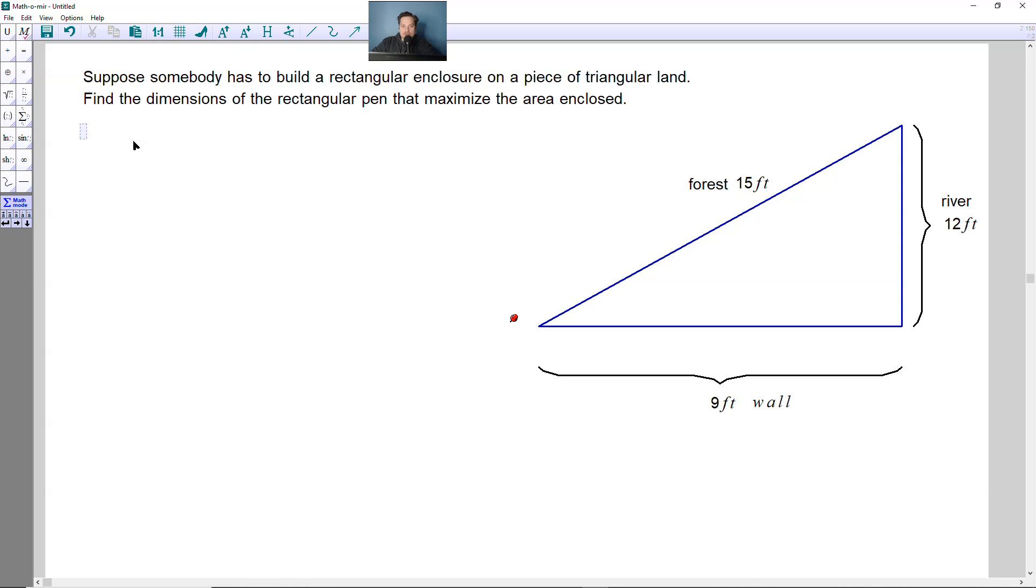This one's taking a look at solving the following question. Suppose somebody has to build a rectangular enclosure on a piece of triangular land. Find the dimensions of the rectangular pen that maximize the area enclosed.